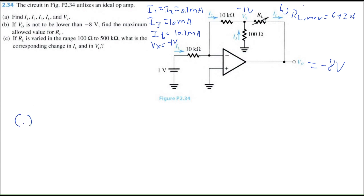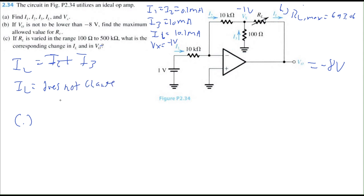For part C, if RL is varied in the range 100 ohms to 500 kilo-ohms, what is the corresponding change in load current and output voltage? Recall from part A that IL equals I2 plus I3. Both I2 and I3 are independent of RL, so IL does not change with RL. Regardless of whether RL is 100 ohms or 500 kilo-ohms, IL will always be 10.1 milli-amps.